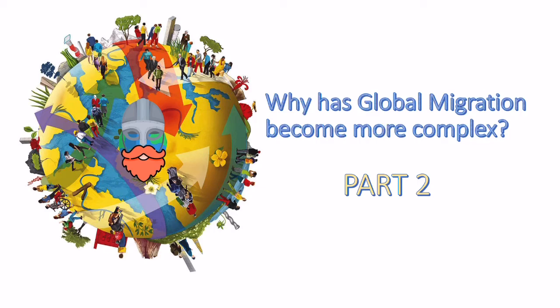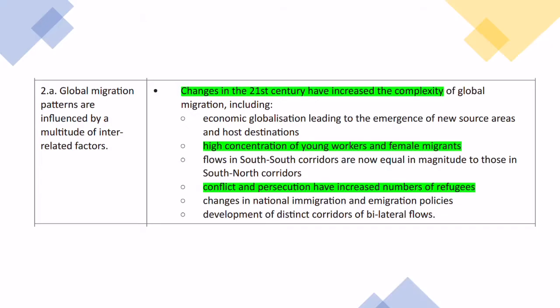In today's video I'm going to be talking about the second part of why global migration is complex. The areas I'm going to be covering today are the high concentration of young workers and female migrants, and how conflict has led to an increased number of refugees. This is OCR A-level geography spec.